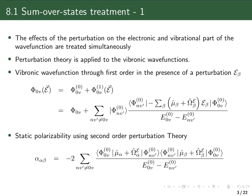Since we are working with vibronic wave functions, the complete set includes all electronic states — all excited electronic states — and all vibrational states within each of those excited electronic states. This set is much larger than in the purely electronic case because we also include all vibrational wave functions for each electronic state. The energies in the denominator are also vibronic energies — not just the electronic energy at equilibrium geometry, but the energy of a vibrational state within a given electronic state.